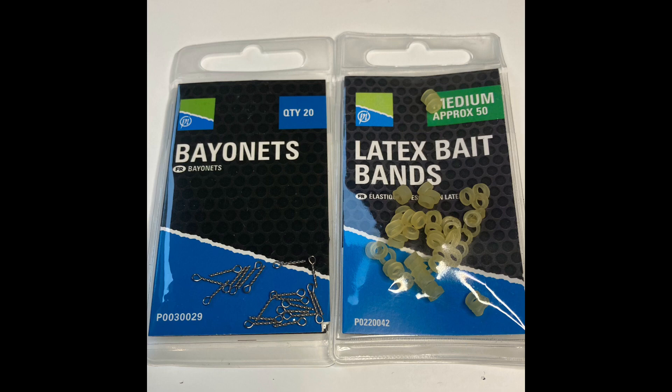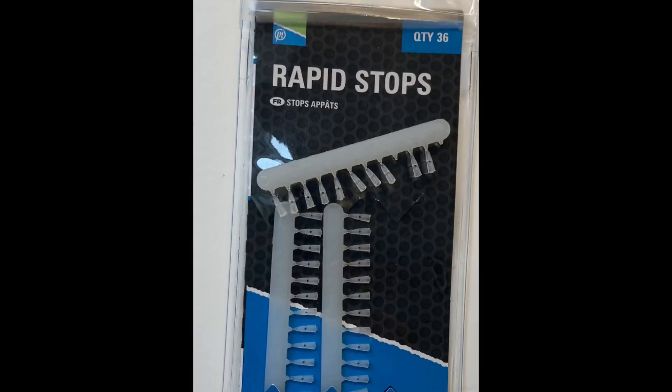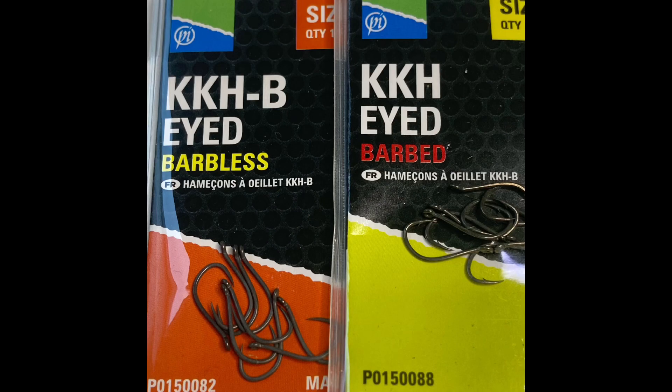Now lots of manufacturers make perfect ready-tied hook lengths with bands, bayonets, and rapid stops on, but sometimes you quite often get a lovely hook pattern that manufacturers don't actually produce hook lengths in that pattern. For me, I love the new KKH and the KKHBs from Preston, but unfortunately we don't do them on the mag store system yet, so I'm going to show you an easy way to tie your hook lengths by hand.